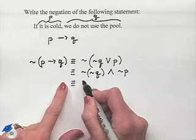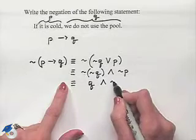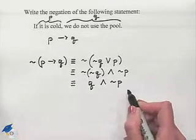We can simplify that. The negation of not Q is Q, and then we have Q and not P as our format.